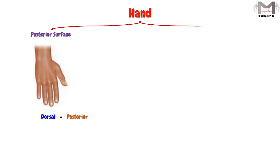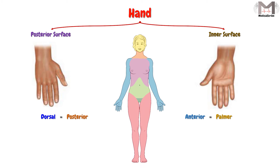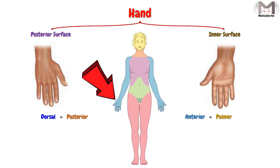While the inner surface of the hand will be described with the Palmer term. The Palmer here will look like the anterior term of the hand if the person stands in the anatomical position.